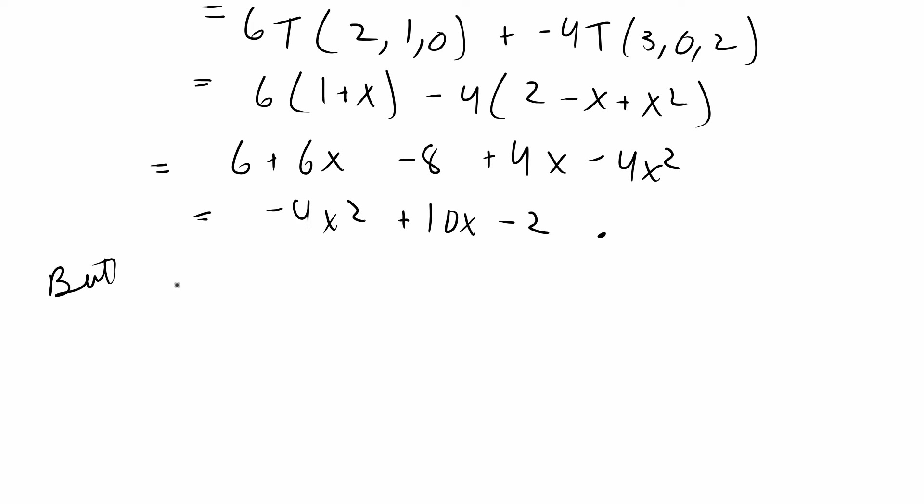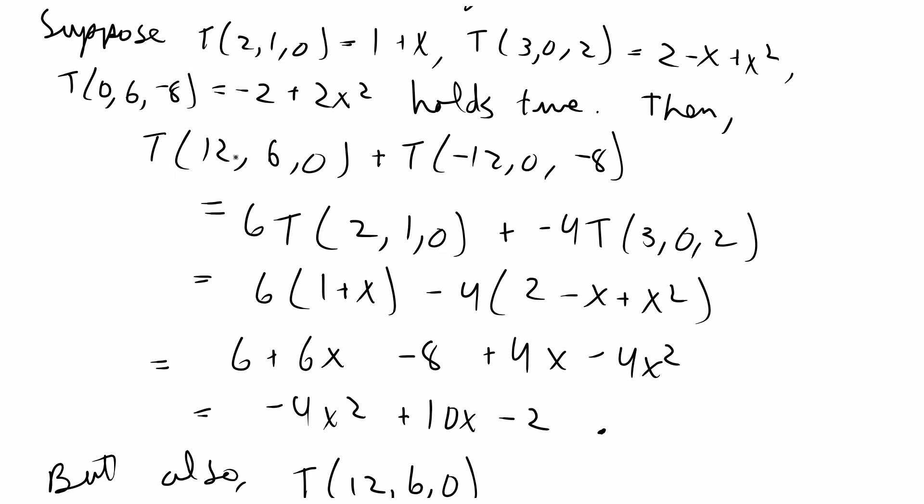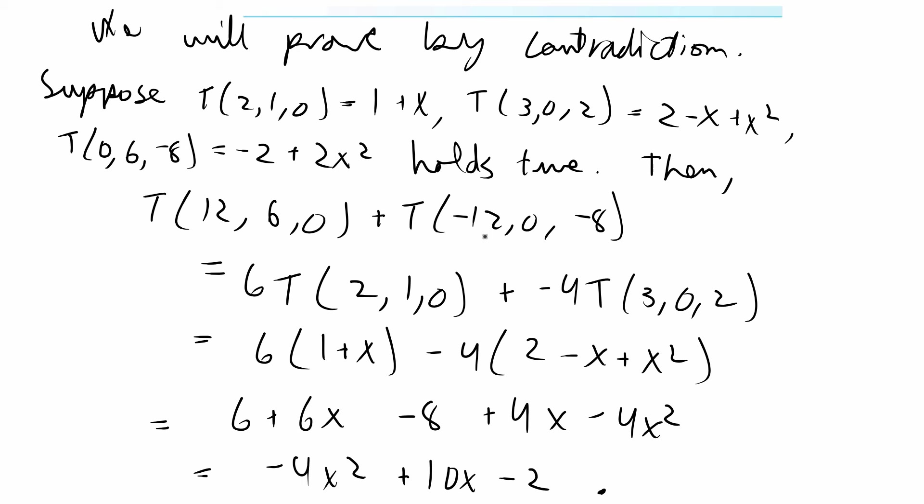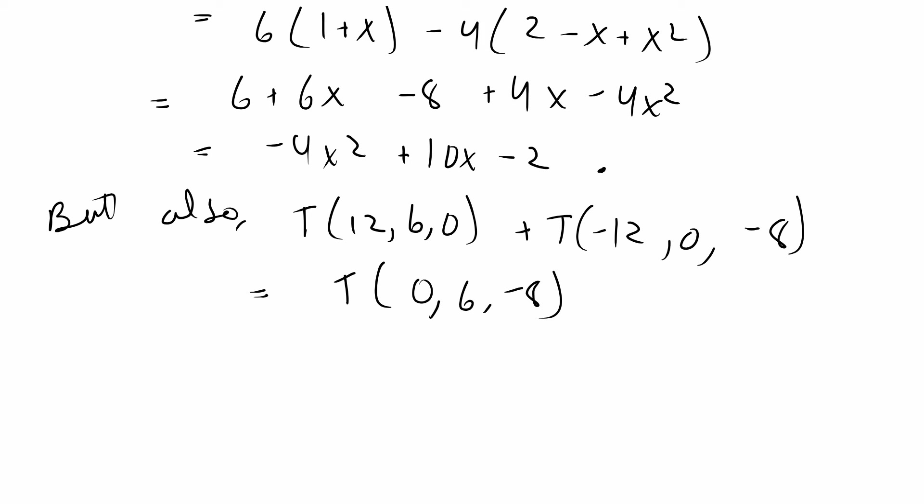So I said, but also T(12, 6, 0). So the same two values plus T(negative 12, 0, negative 8) is equal to T(0, 6, negative 8). So if you add the respective values, you'll get 0, 6, negative 8.